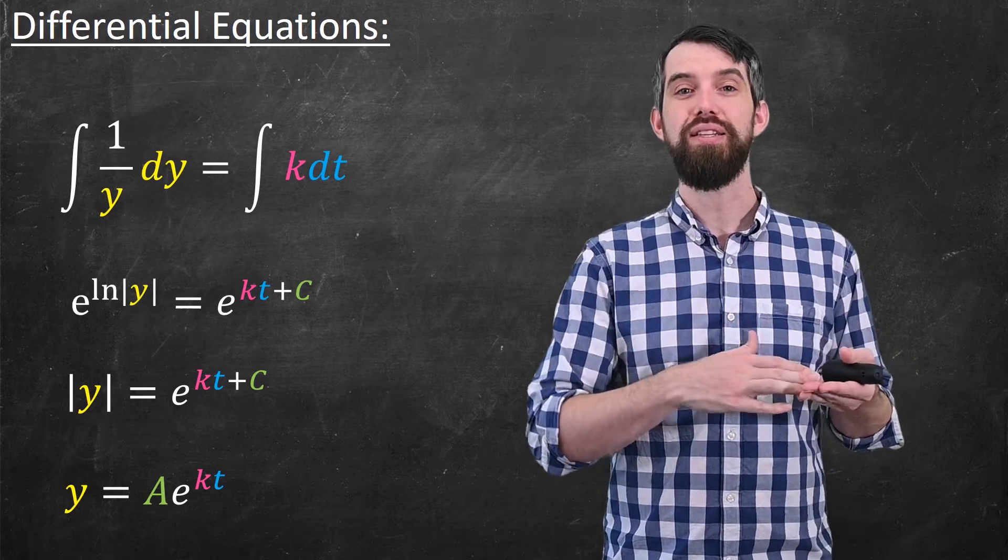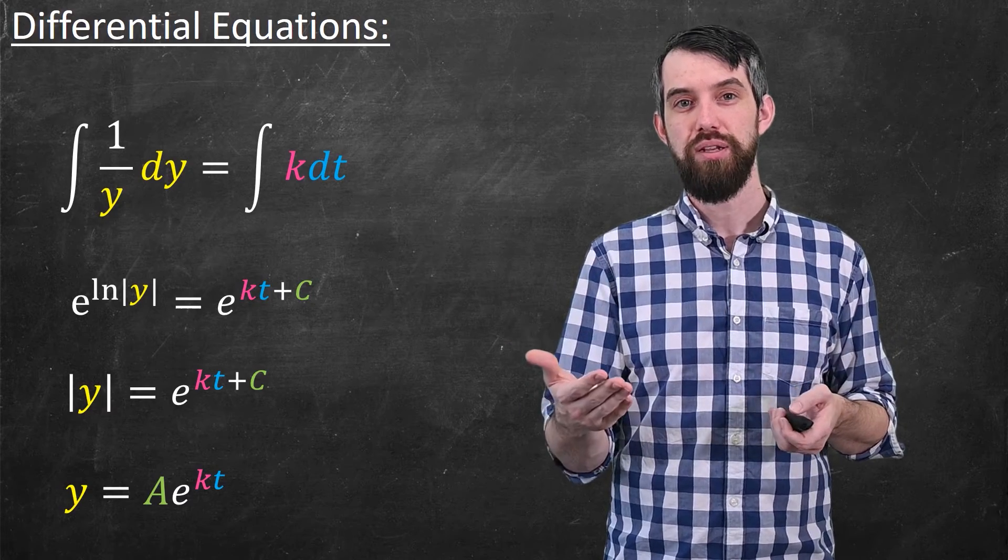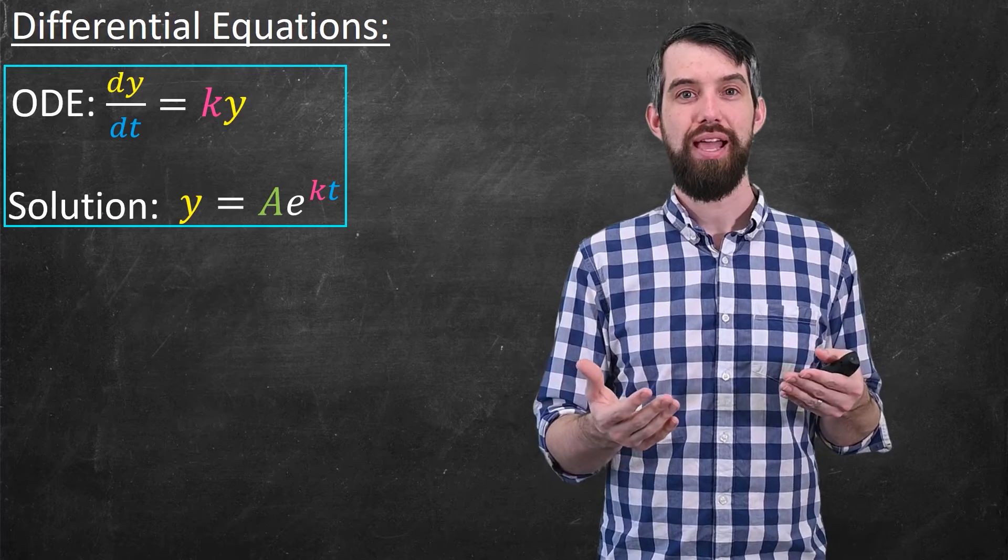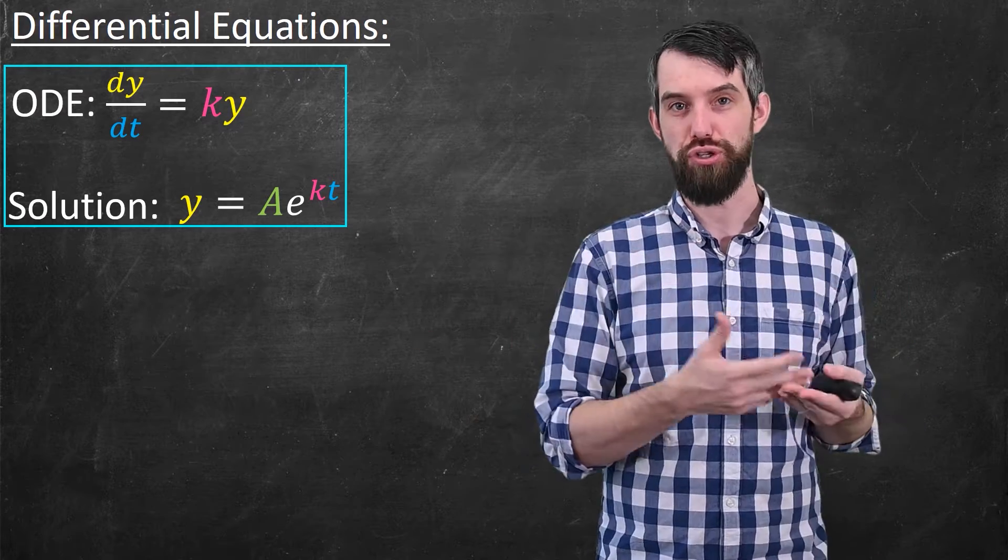So in the end, I have this y as a constant A times the e to the kt. So I call this a solution to the differential equation. y equal to Ae to the kt is a solution to it.